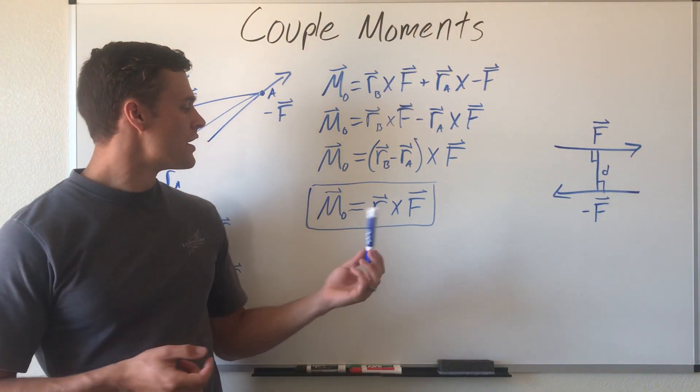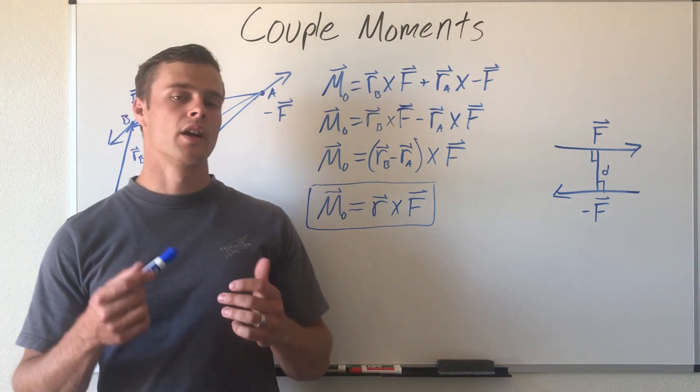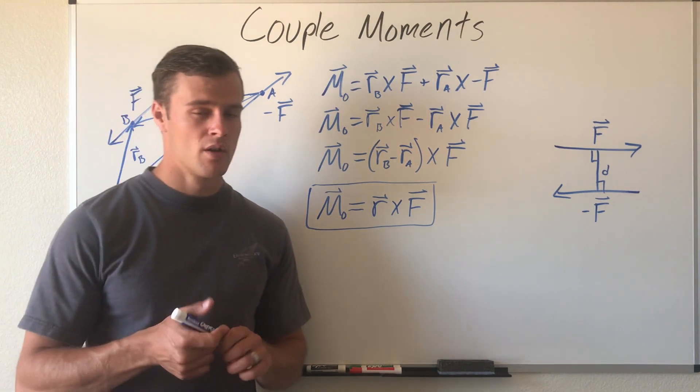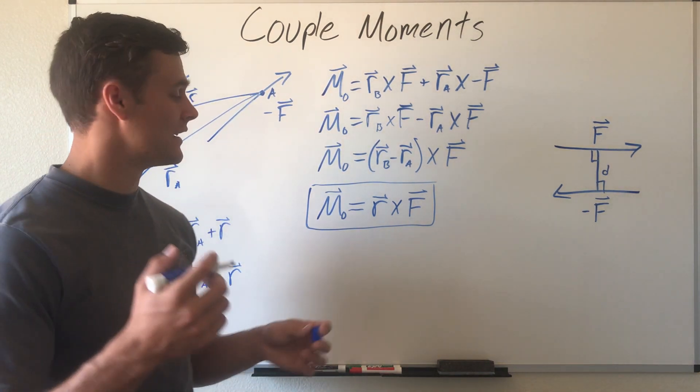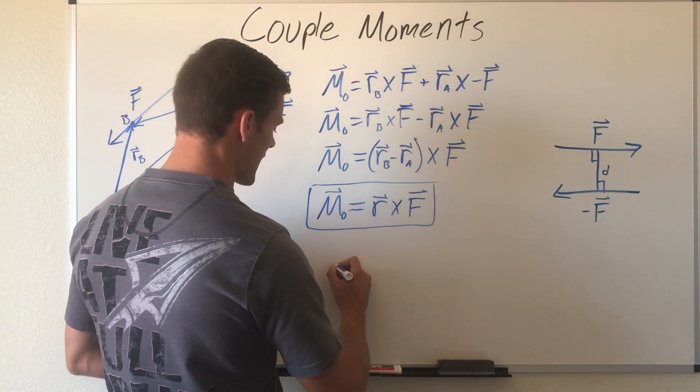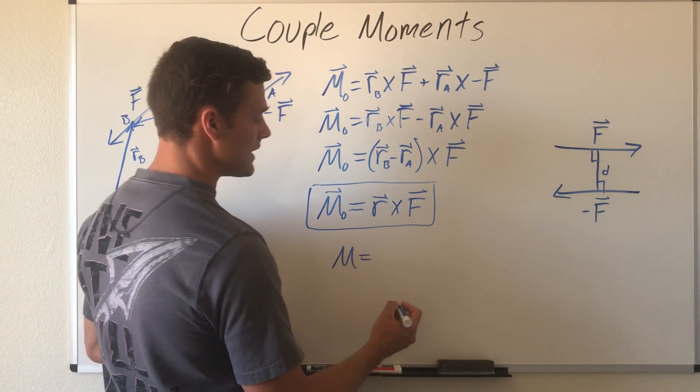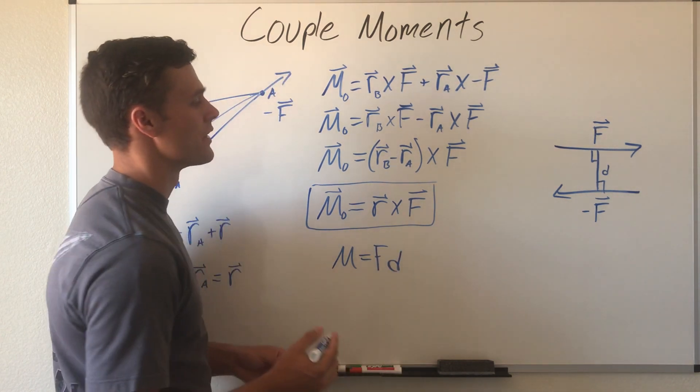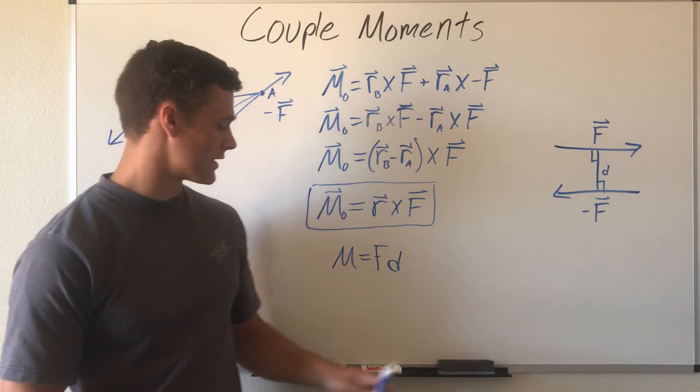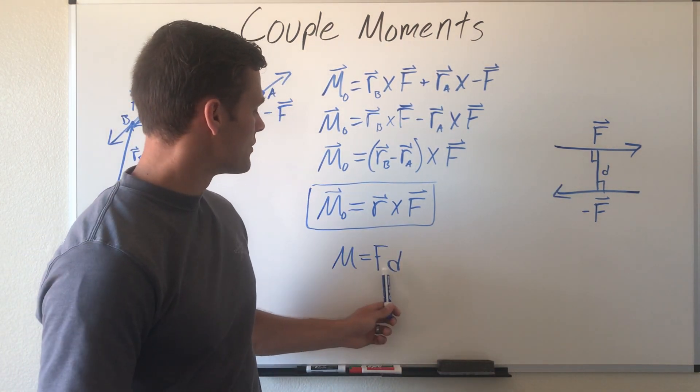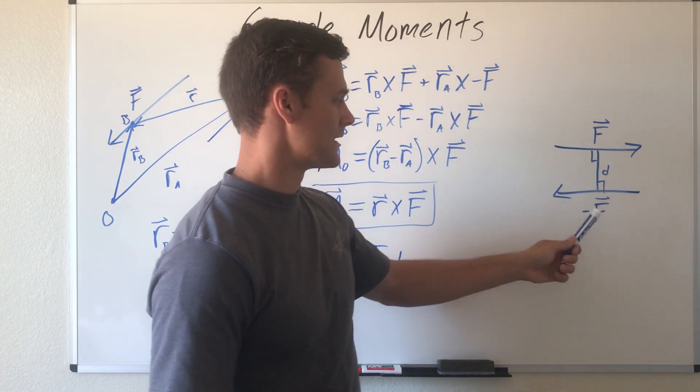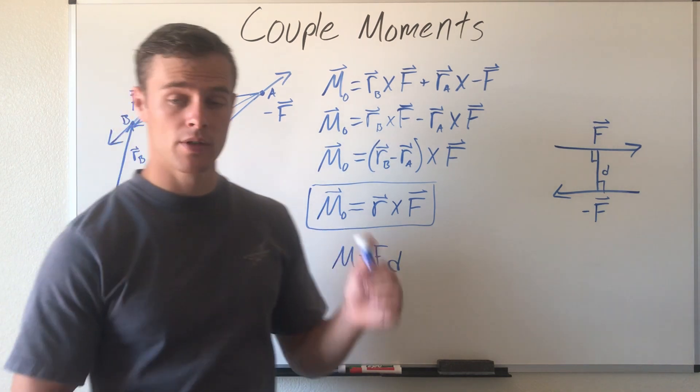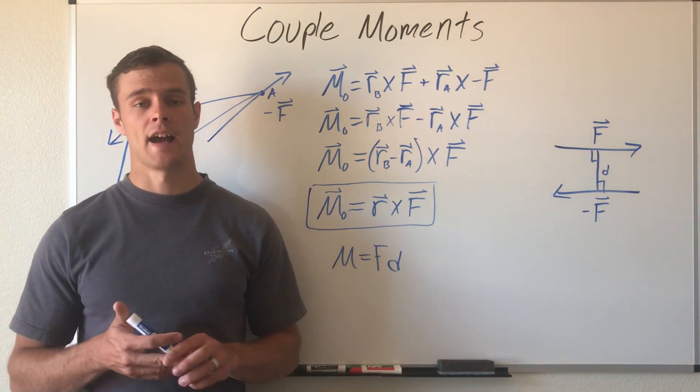This will be important when you're using couple moments. If you're just wanting to find the magnitude, which is often what you'll do in 2D space, that is going to be the magnitude equals our force times the perpendicular distance between your two forces. This is using the exact same variables except you just have the magnitude of your force and you have a perpendicular distance between those two forces acting as the moment arm.